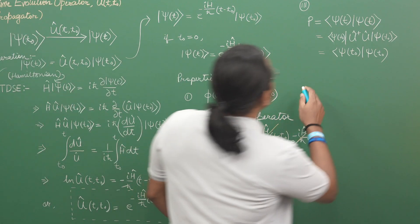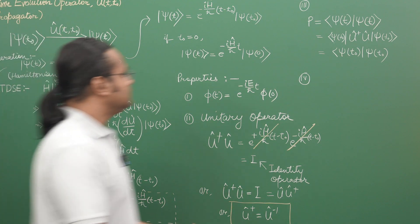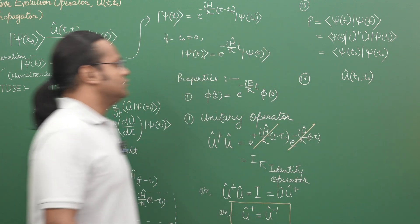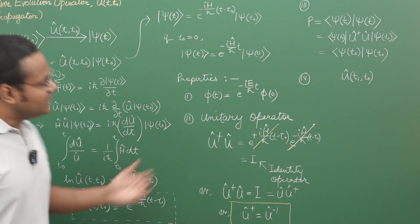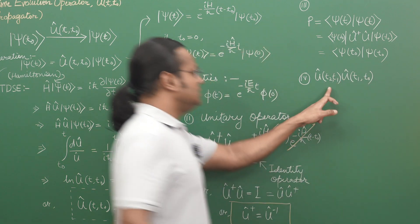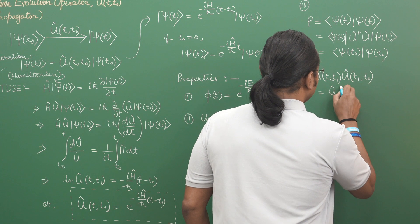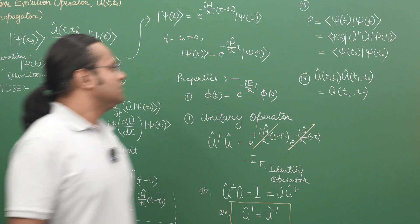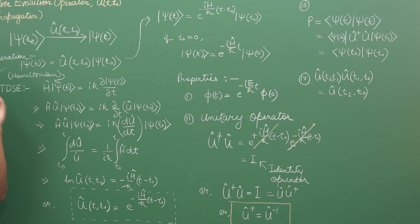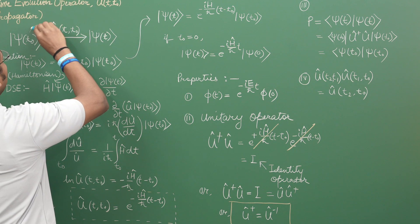The next property is that if you perform the time evolution operator one after the other — for example, U from T0 to T1 gives the evolution from T0 to T1, and then U from T1 to T2 gives evolution from T1 to T2 — the combined result is simply U(T2, T0). That means the overall operator gives us a state evolved from T0 to T2 in one step.